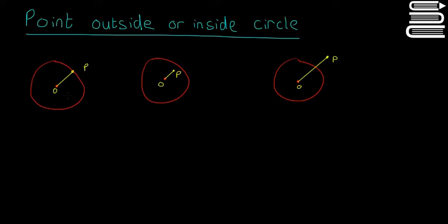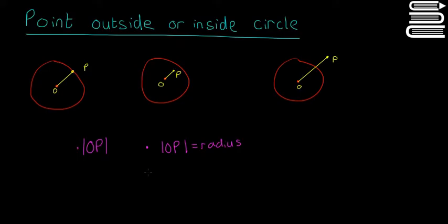If we want to find out if a point is inside, outside or on the circle, we need to find the distance OP using the distance formula. If OP is equal to the radius — equal to OR — that means the point is going to be on the circle.